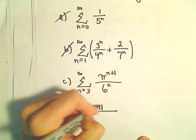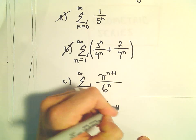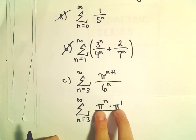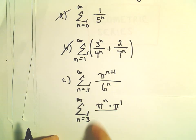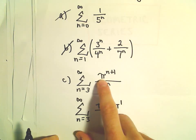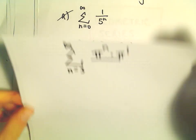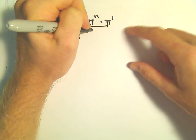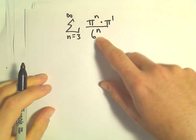So I could write this as pi to the n times pi to the first, right? With like bases, we would just add the exponents. So we can certainly stick pi to the n times pi to the first back together as pi to the n plus 1. And then it's still being raised, or excuse me, it's over 6 to the n power.